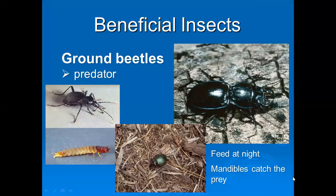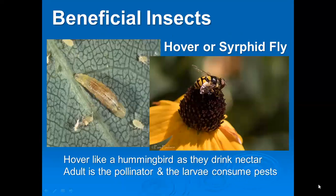Ground beetles — there are different types. The larva lives underground and they're also consuming a lot of insects. Most ground beetles feed at night. And then hover or syrphid flies — these are great beneficial insects. A lot of people confuse them for bees because they look a lot like bees and they hover over the plants. But they are actually a fly.